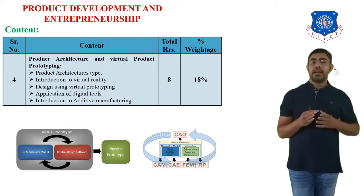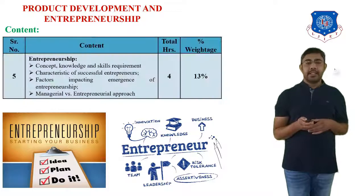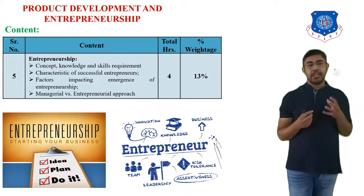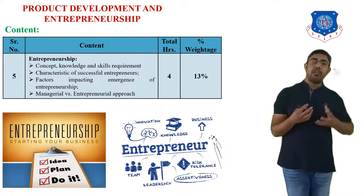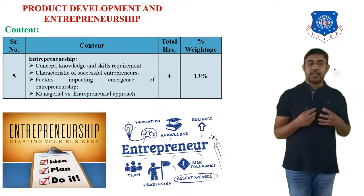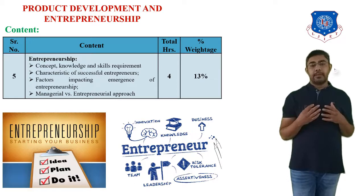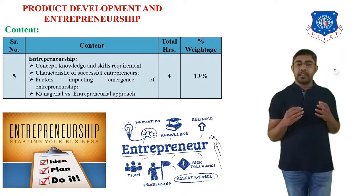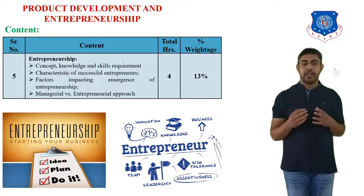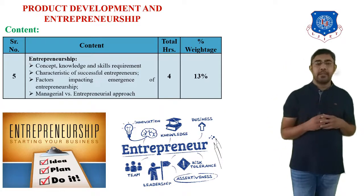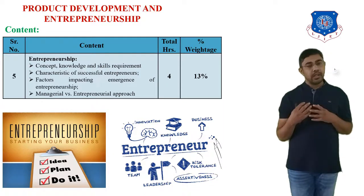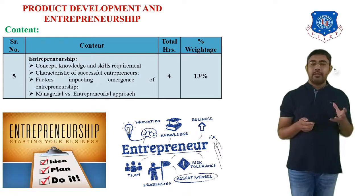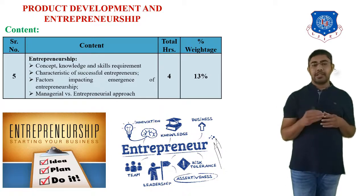The next content is Entrepreneurship — starting your own business. In this chapter you have to learn the concept of entrepreneurship, the knowledge and skills required for entrepreneurship, and the characteristics of successful entrepreneurs. An entrepreneur is a person who starts a business or a new project. You also have to learn which factors drive the emergence of entrepreneurship. The approximate percentage of this chapter is 13%.